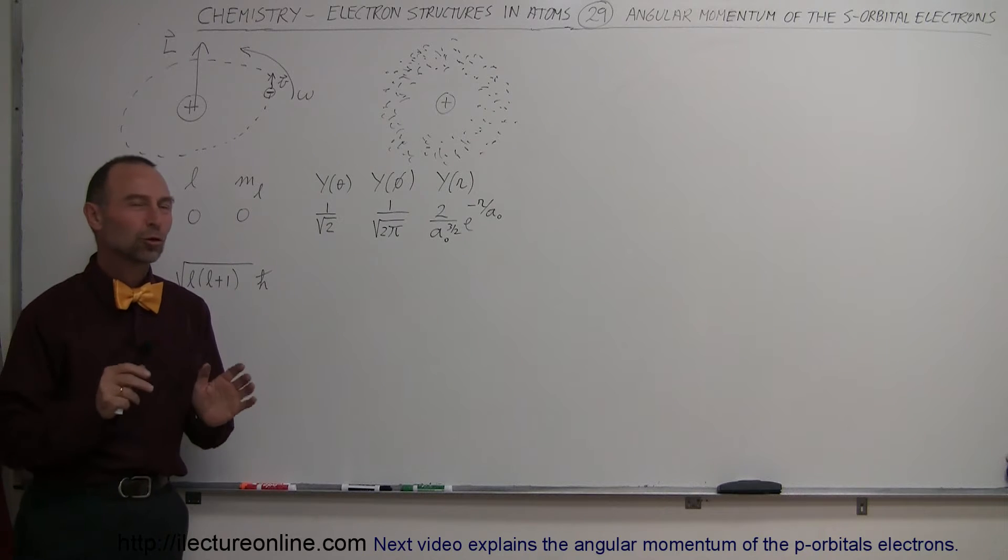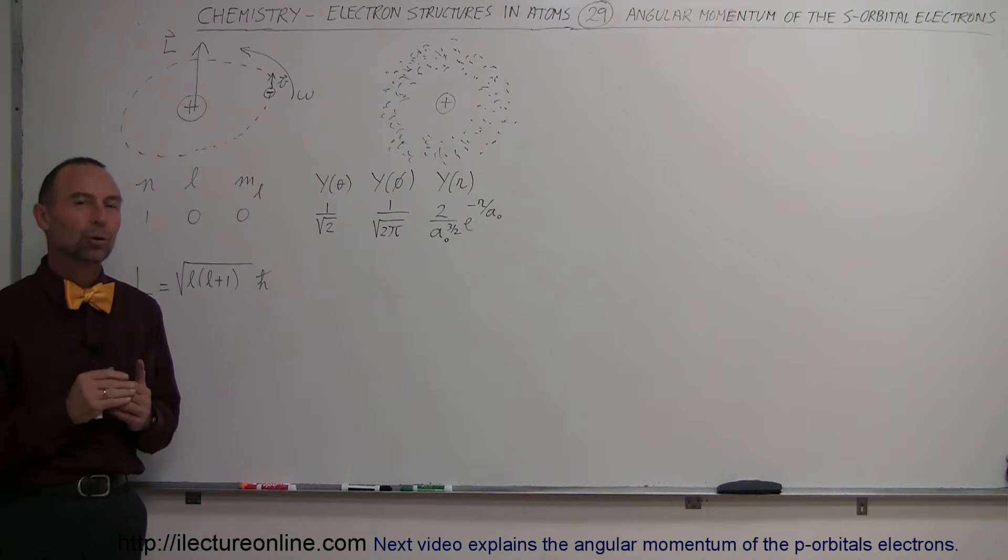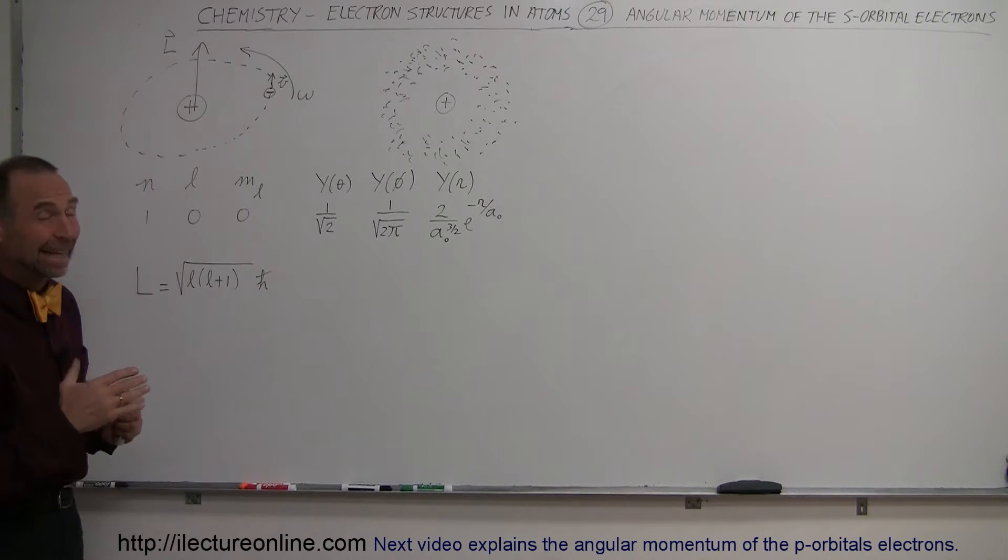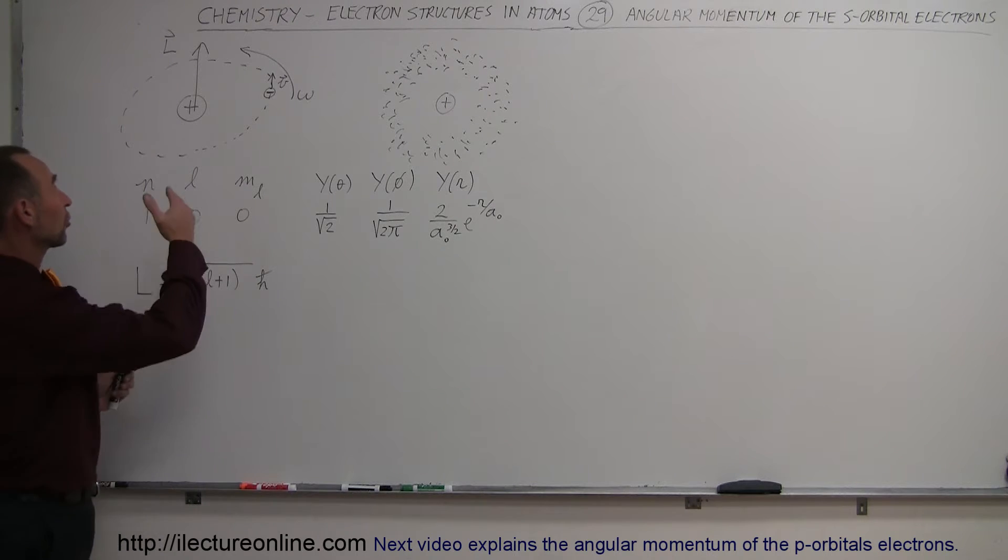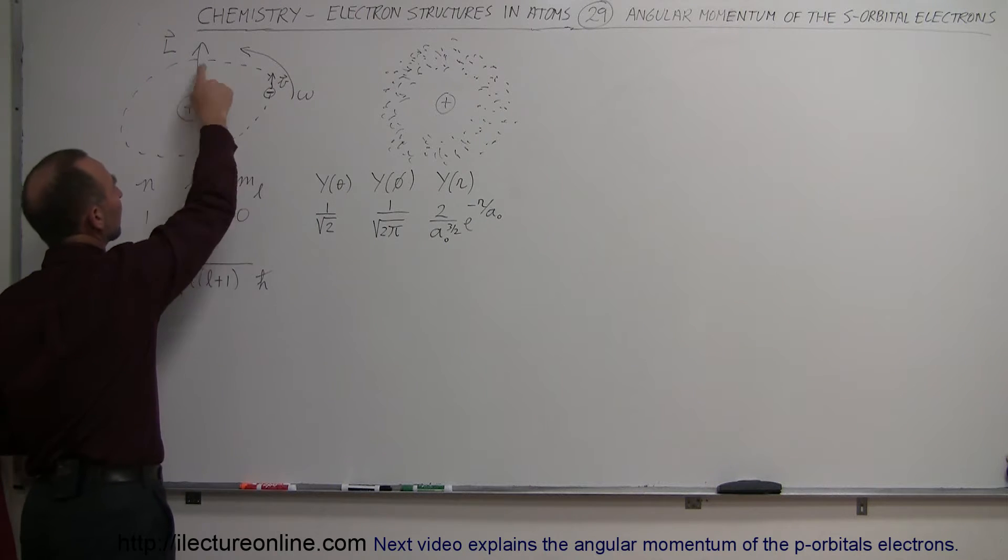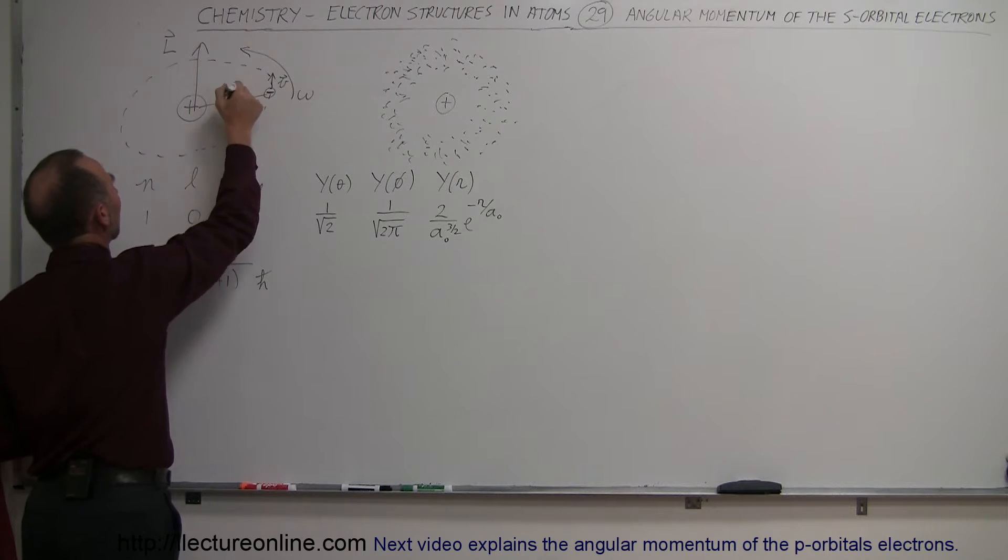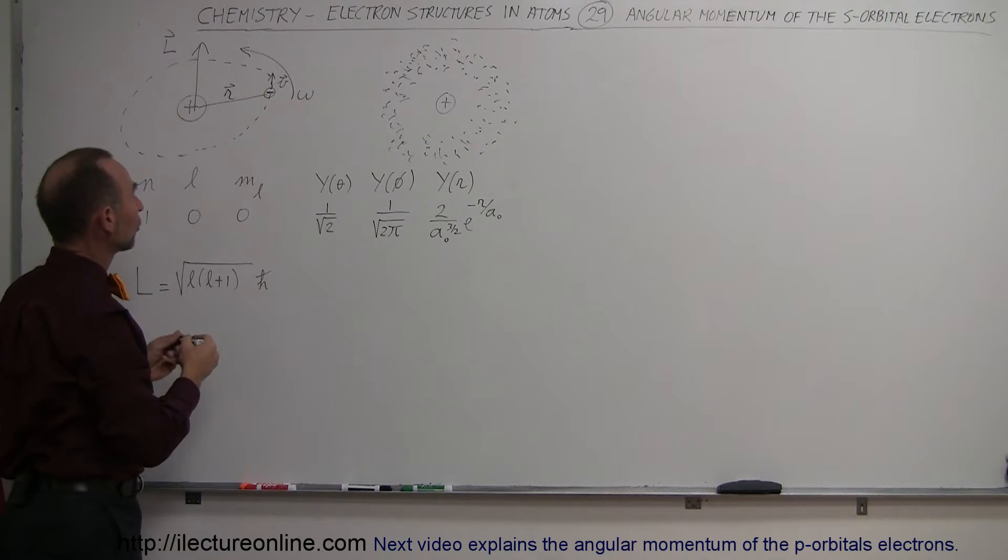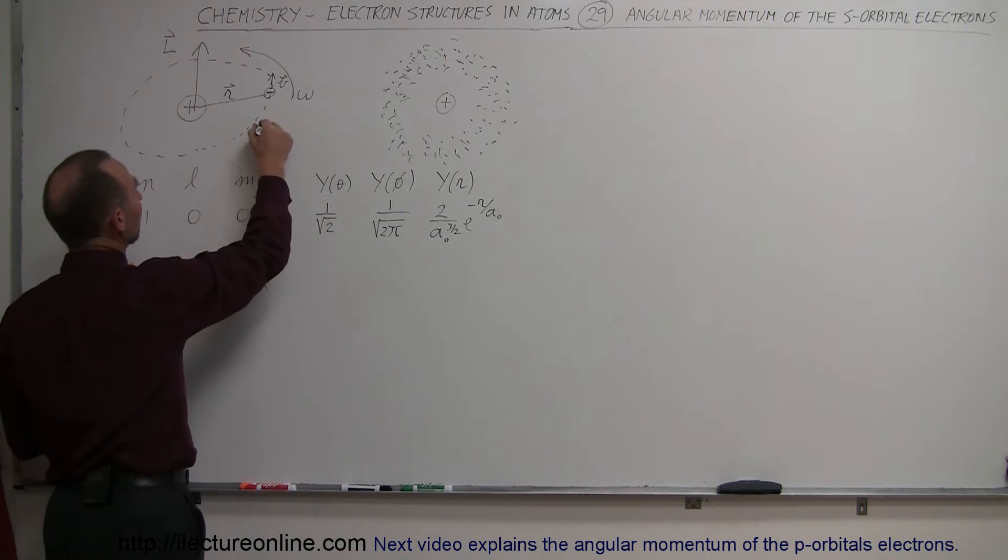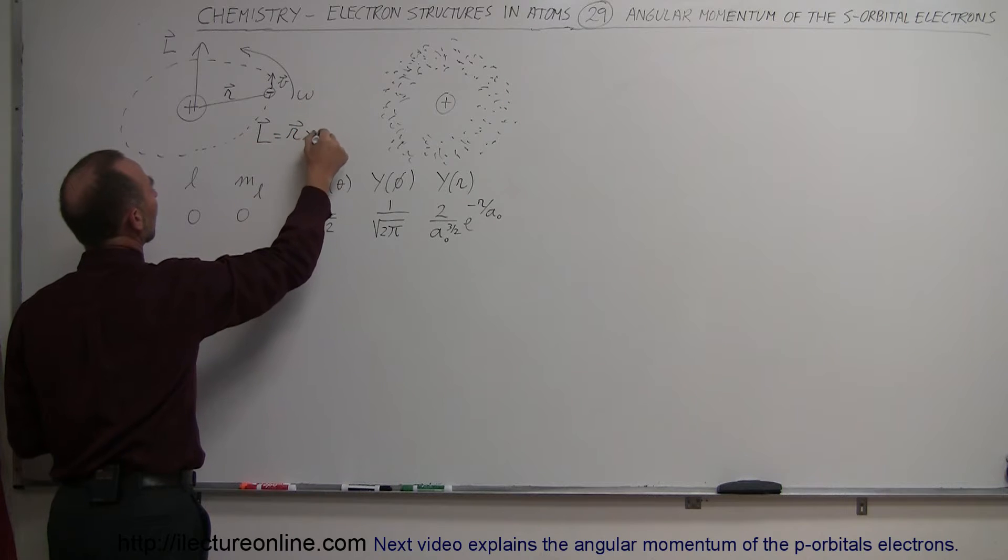In this video, we're going to take a closer look at the angular momentum of an electron in the s orbital. First of all, angular momentum is simply a vector quantity where we have an object going around another object. That object has mass, velocity, and is at a distance r away from the central point of the orbit. It turns out that the angular momentum is equal to r cross p.